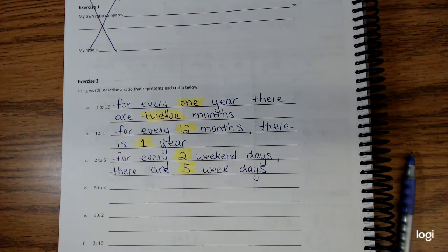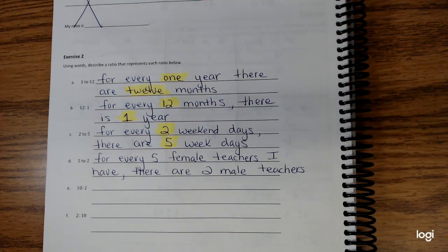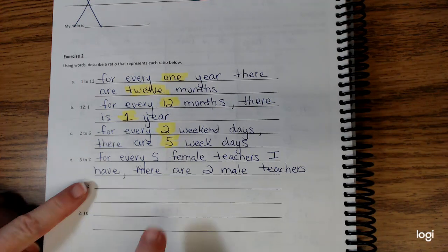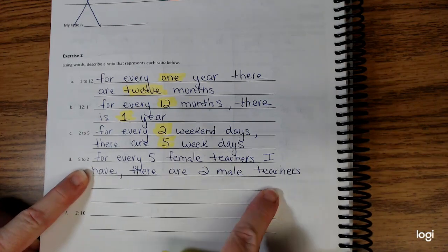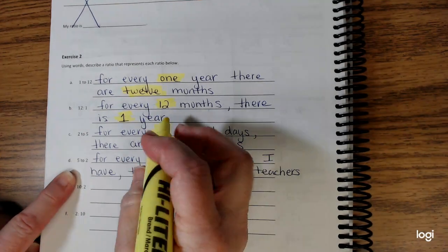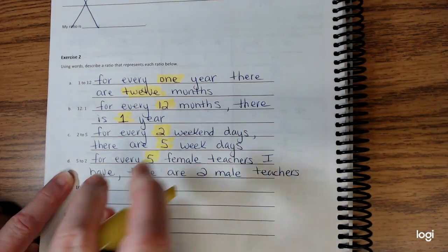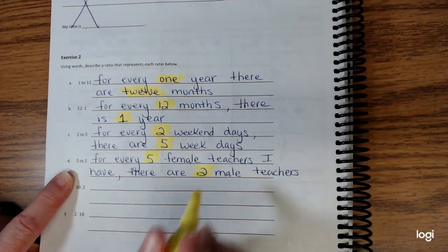Let's look at the next one. This time if I wanted to, I could take the same thing and turn it around, or I could write a whole new story. I decided to do a whole different story. I have for every five female teachers I have, there are two male teachers. So I have a scenario with the numbers 5 and 2.